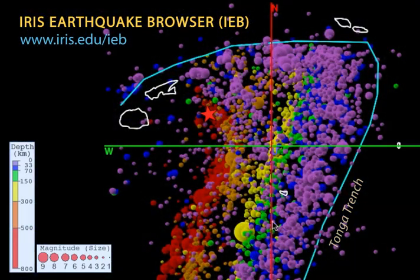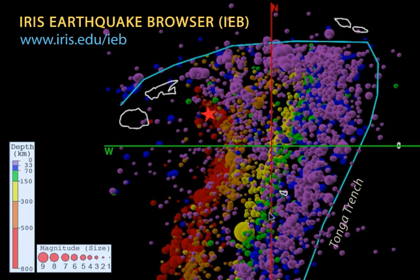Using the Iris earthquake browser we see a pattern of earthquakes that is shallowest at the Tonga Trench and gets deeper to the west, where this earthquake occurred at over 500 km depth. Though the epicenter is above the Australian plate,